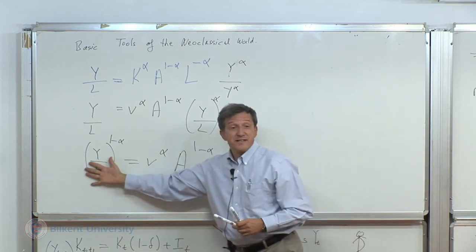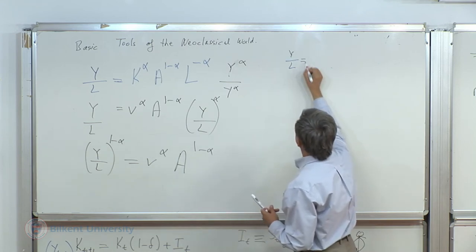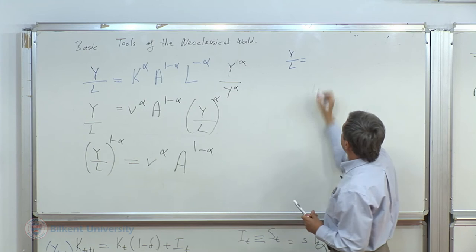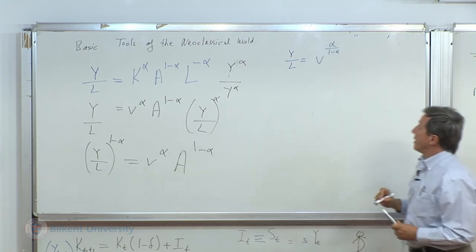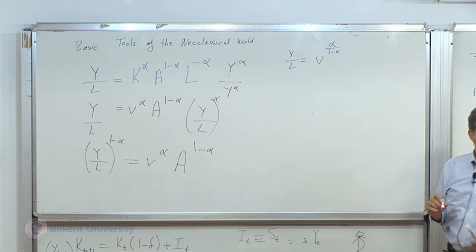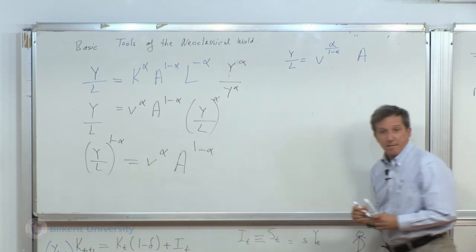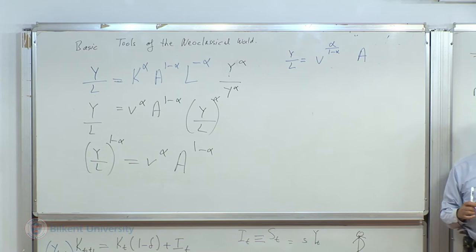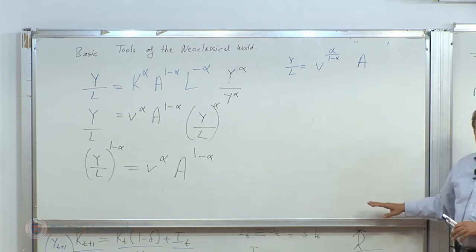I got rid of this power and say that Y over L is simply V to the power alpha over 1 minus alpha. And this 1 minus alpha disappears.